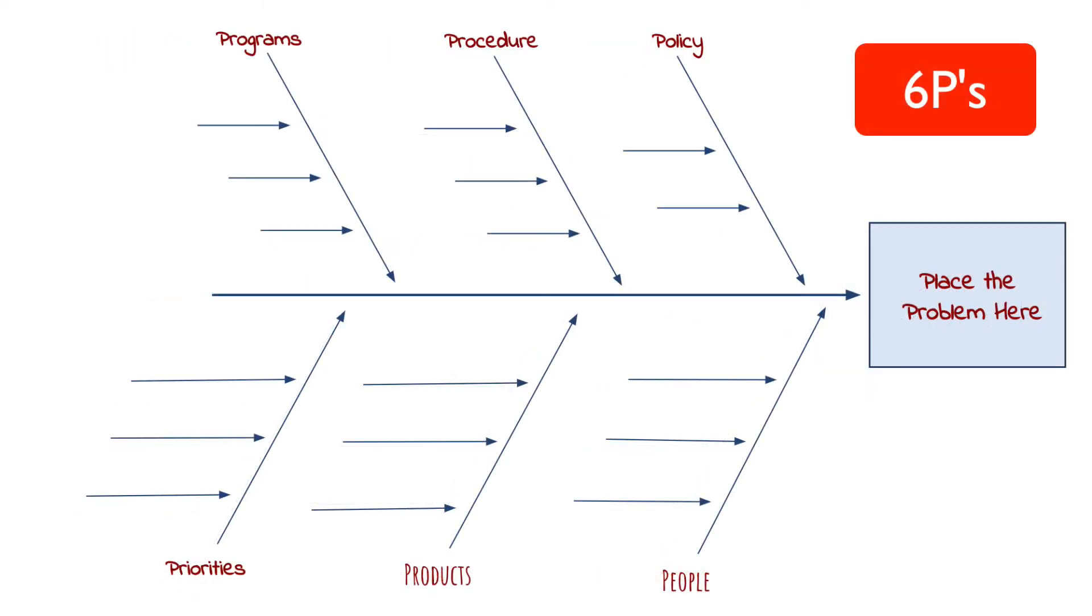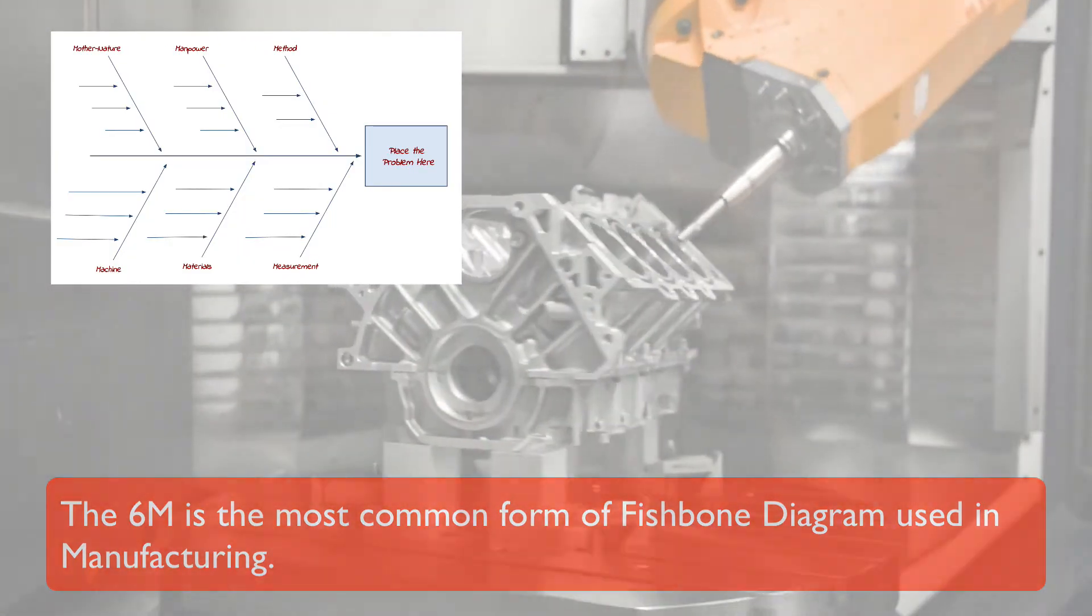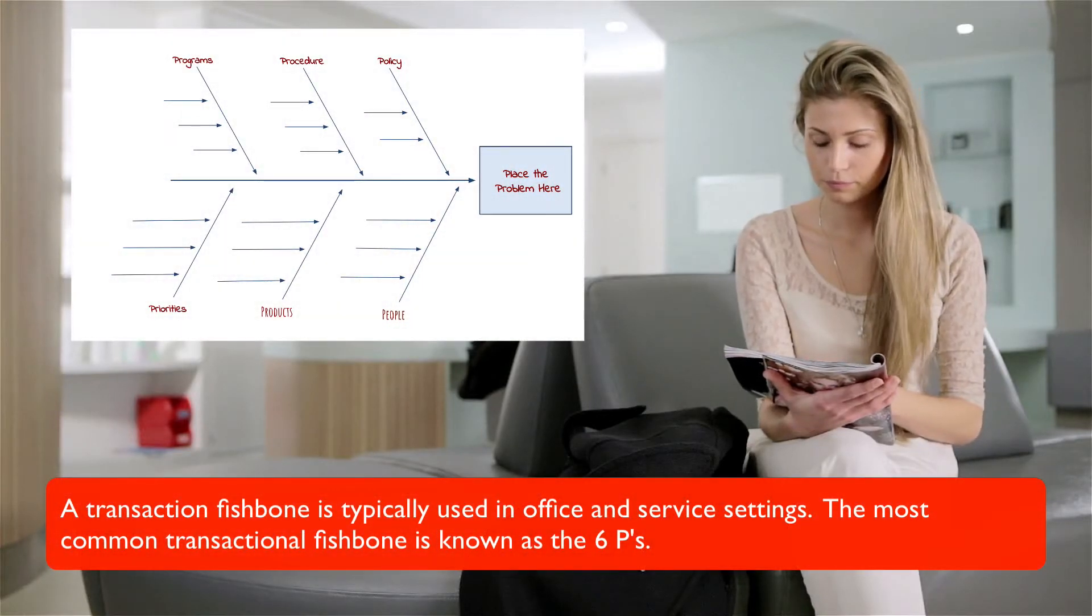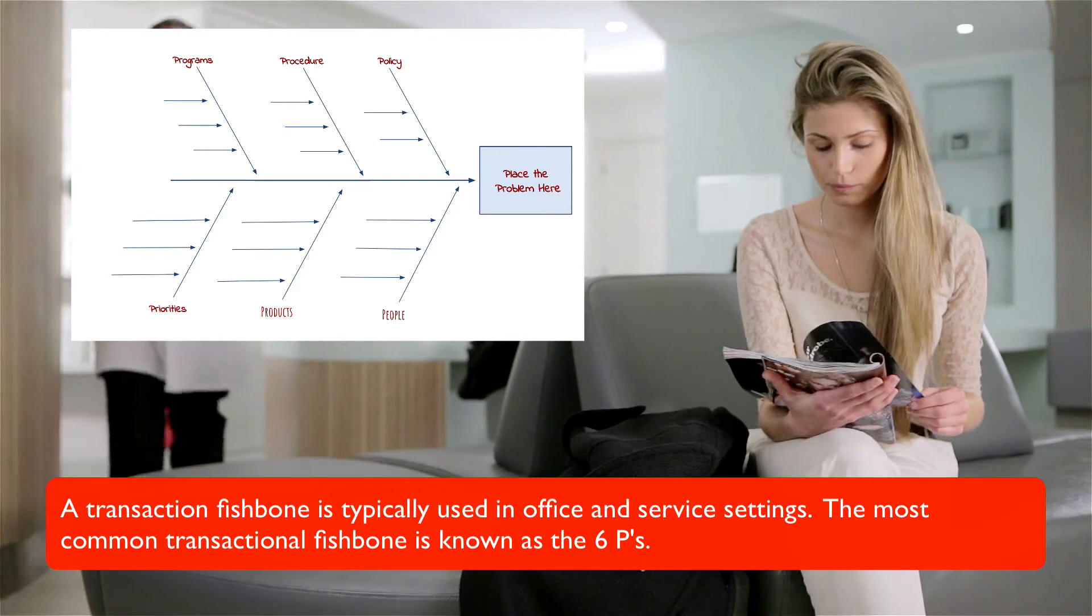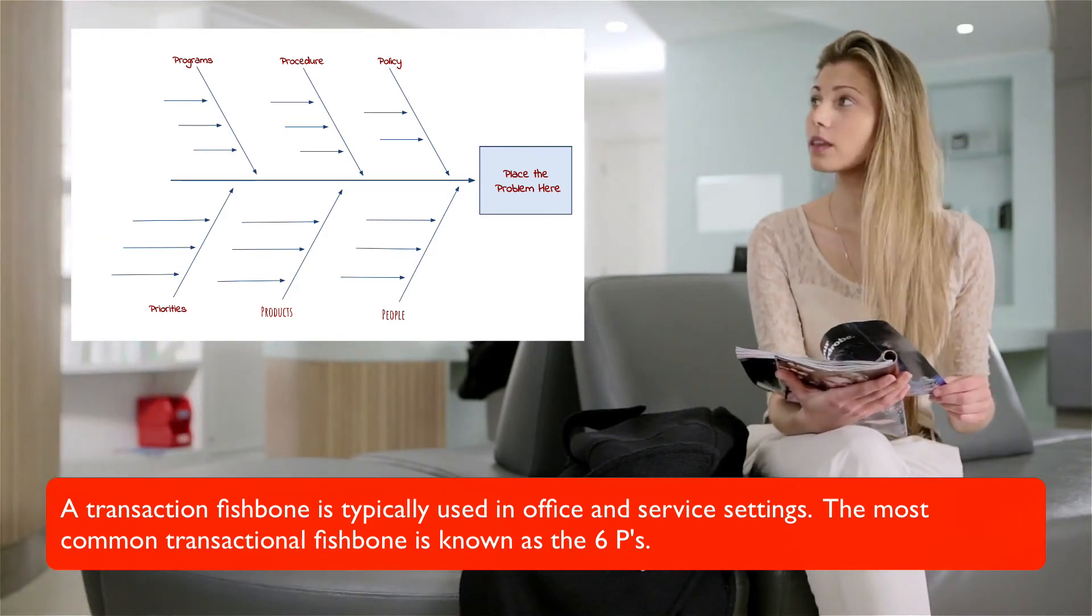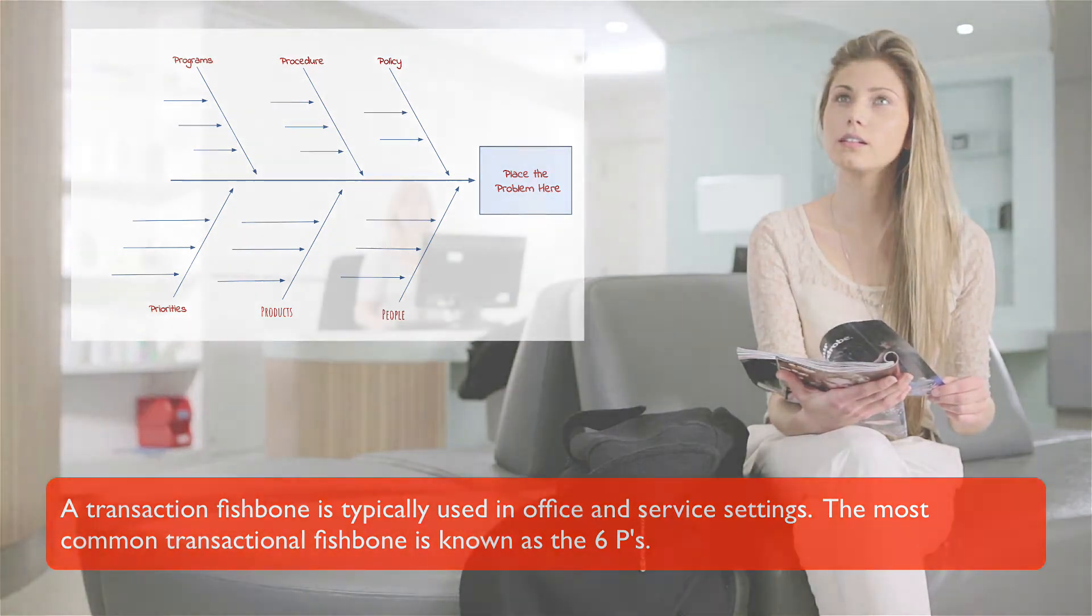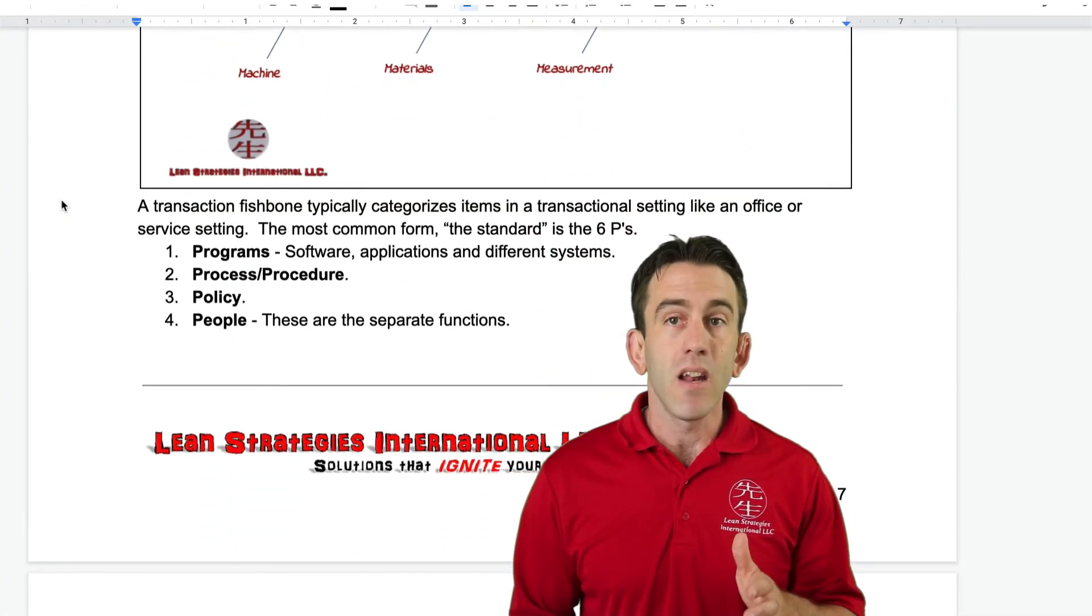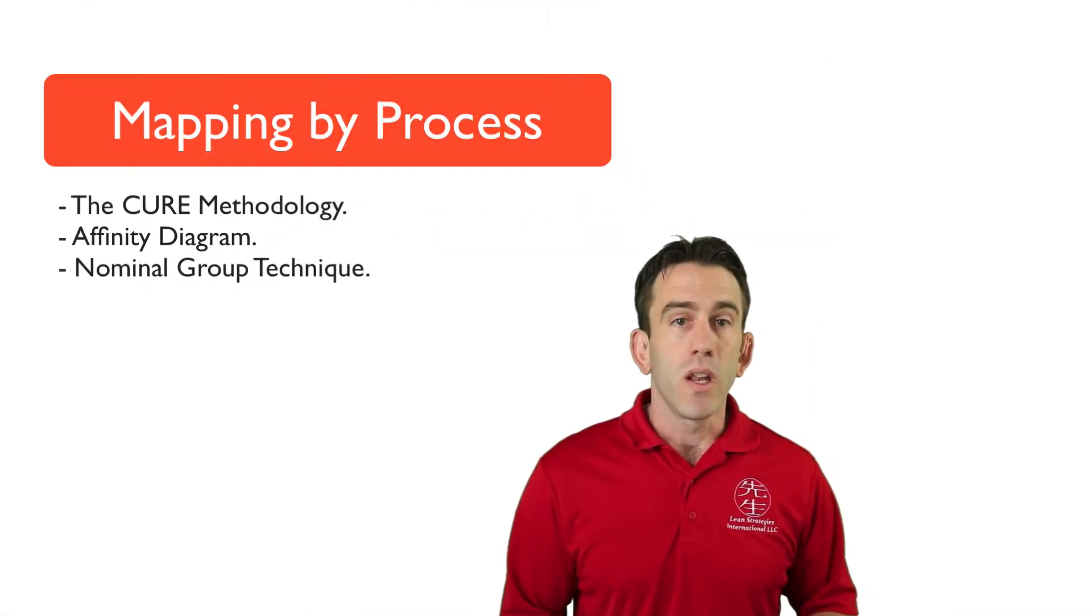The most common form of manufacturing fishbone is the 6Ms. A transactional fishbone is typically used in office and service settings to map the transactional setting environments. The most common of this transactional fishbone is known as the 6Ps. You can see an example of both the manufacturing and transactional fishbones in your handouts.